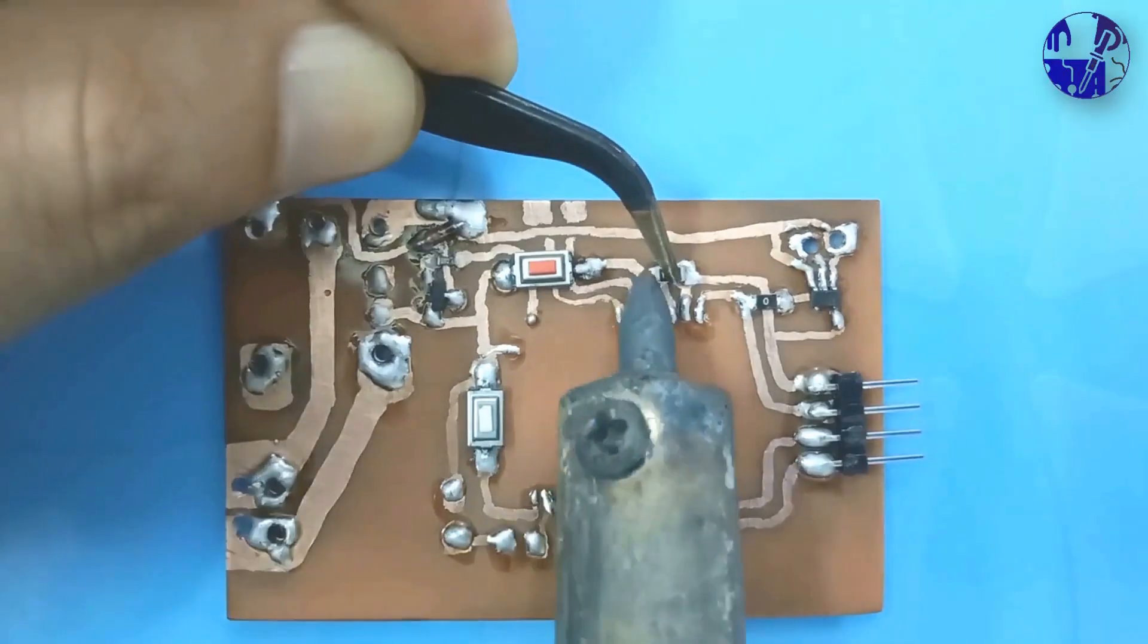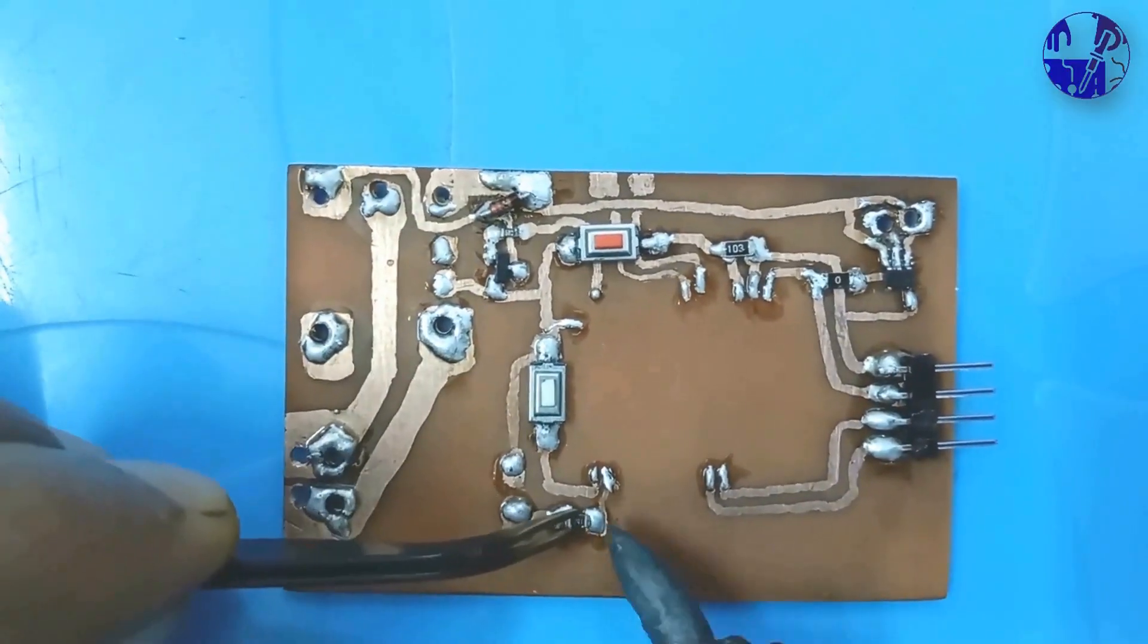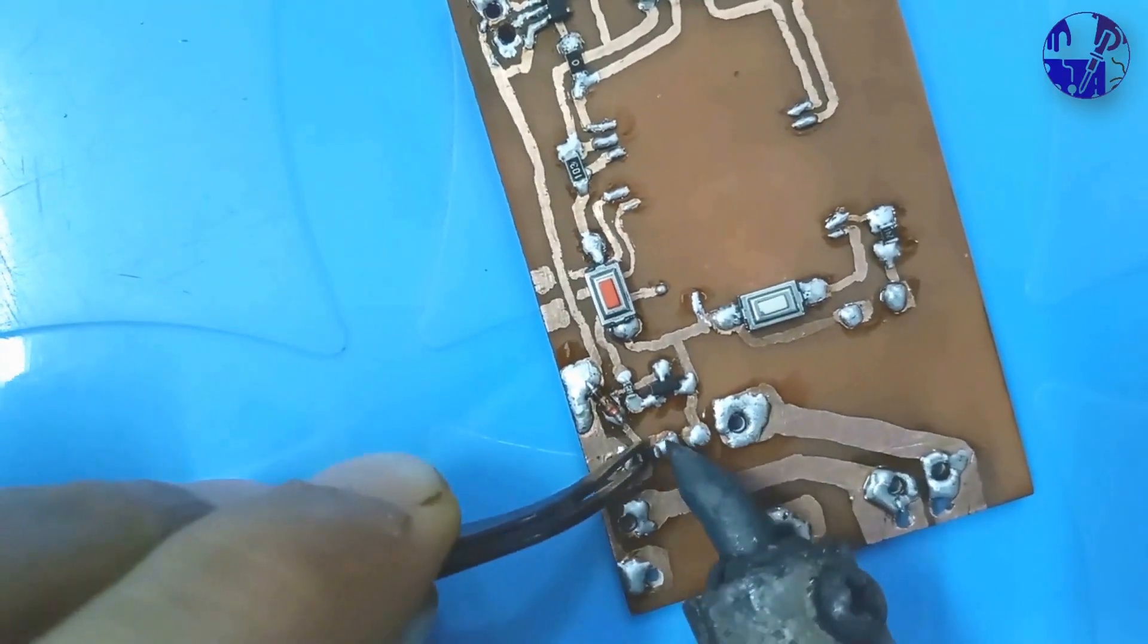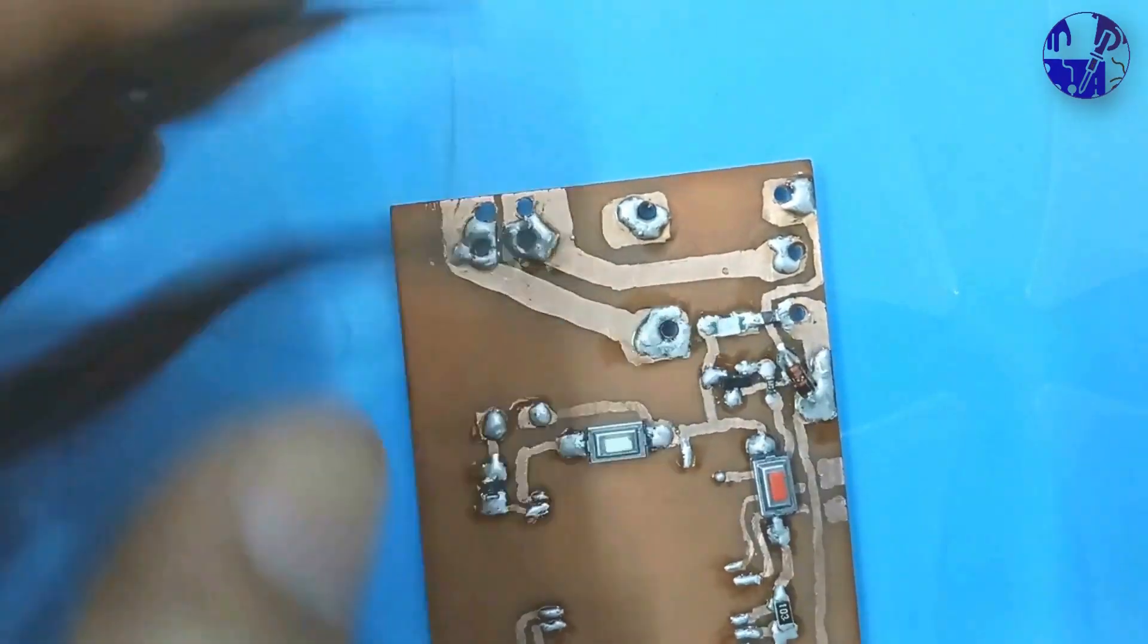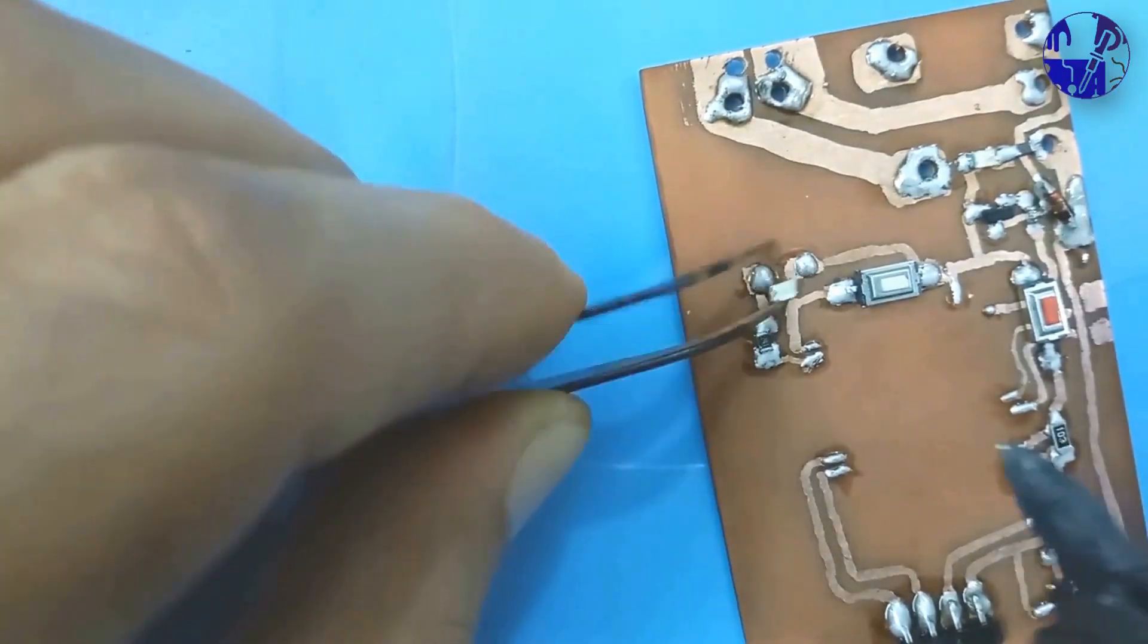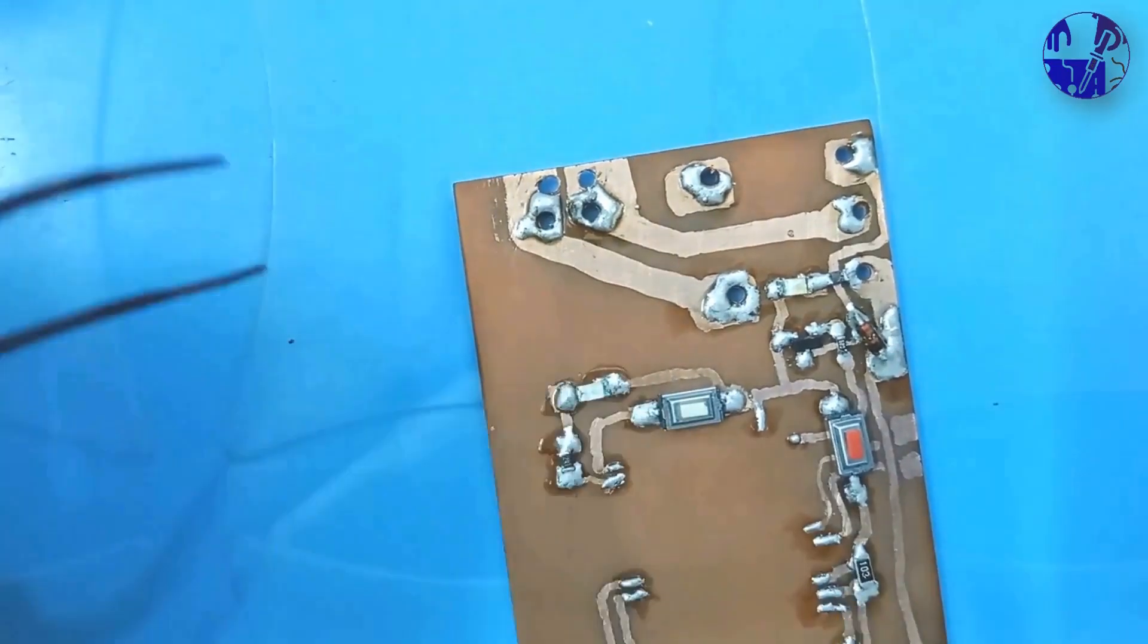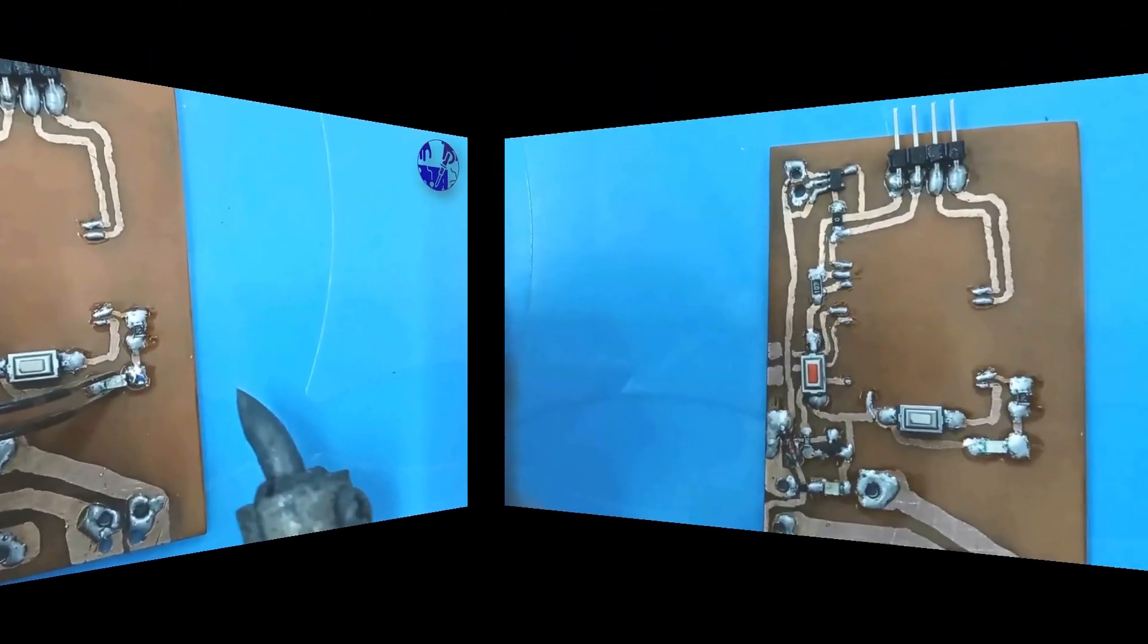After performing a task, the ESP32 device also sends feedback to the Android device through the Google server. The Android device reads the feedback from the server and updates the status of a task on its app.